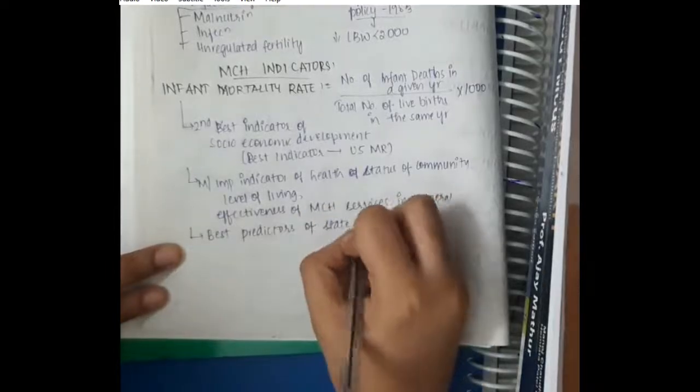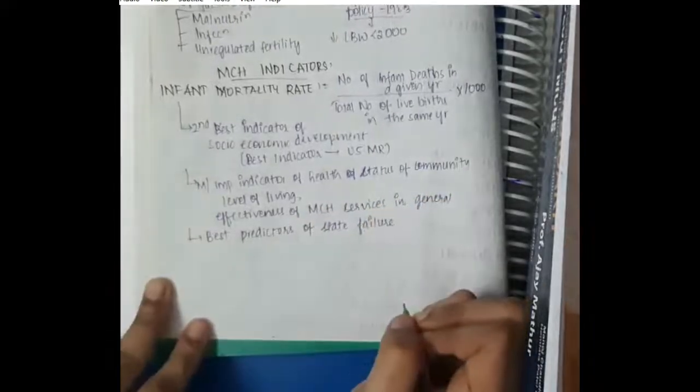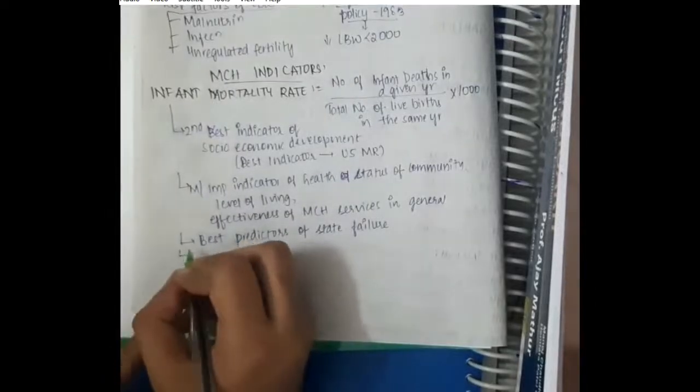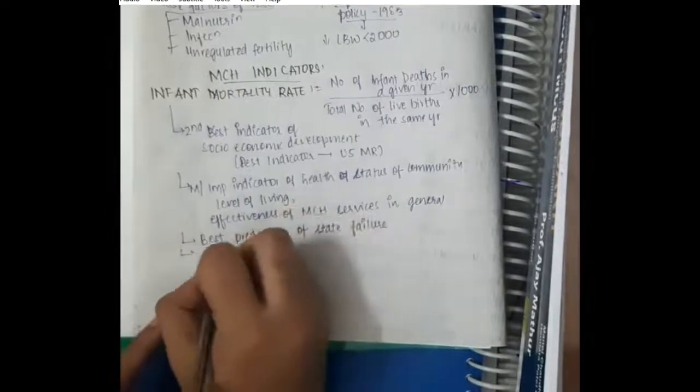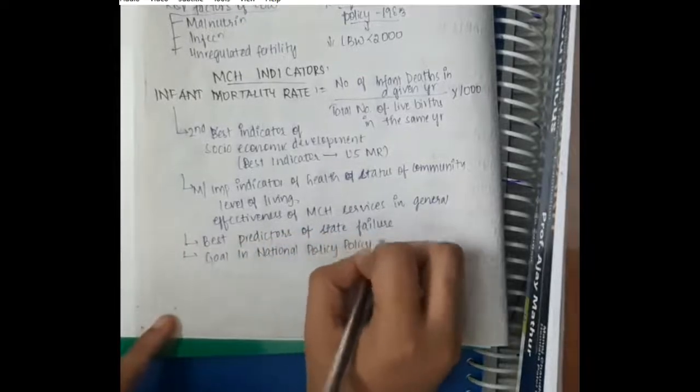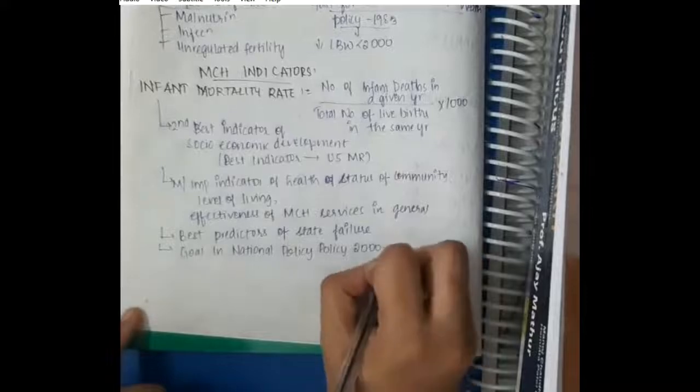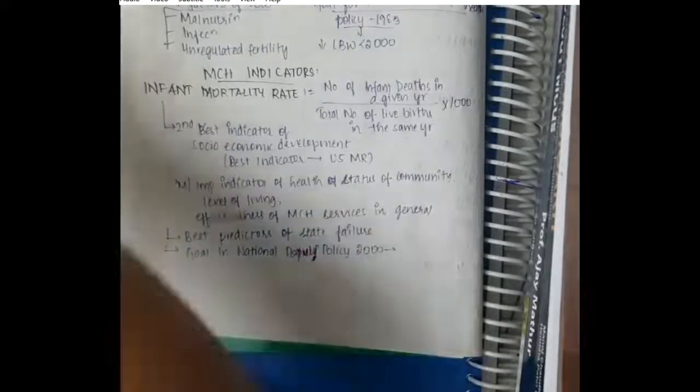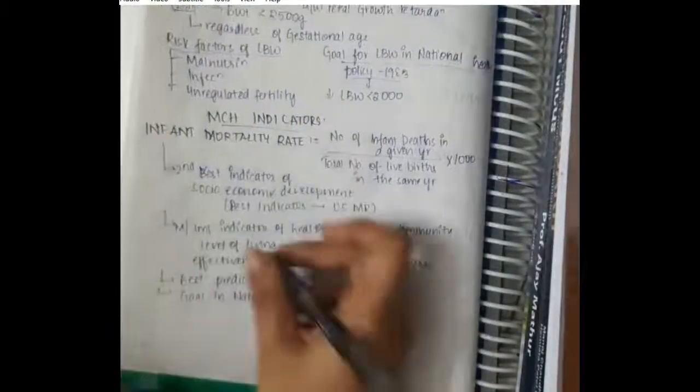This infant mortality rate is the best predictor of state failure. The goal for infant mortality rate is present in two policies. The goal for infant mortality rate in national population policy 2000 is 30 per 1000 live births.